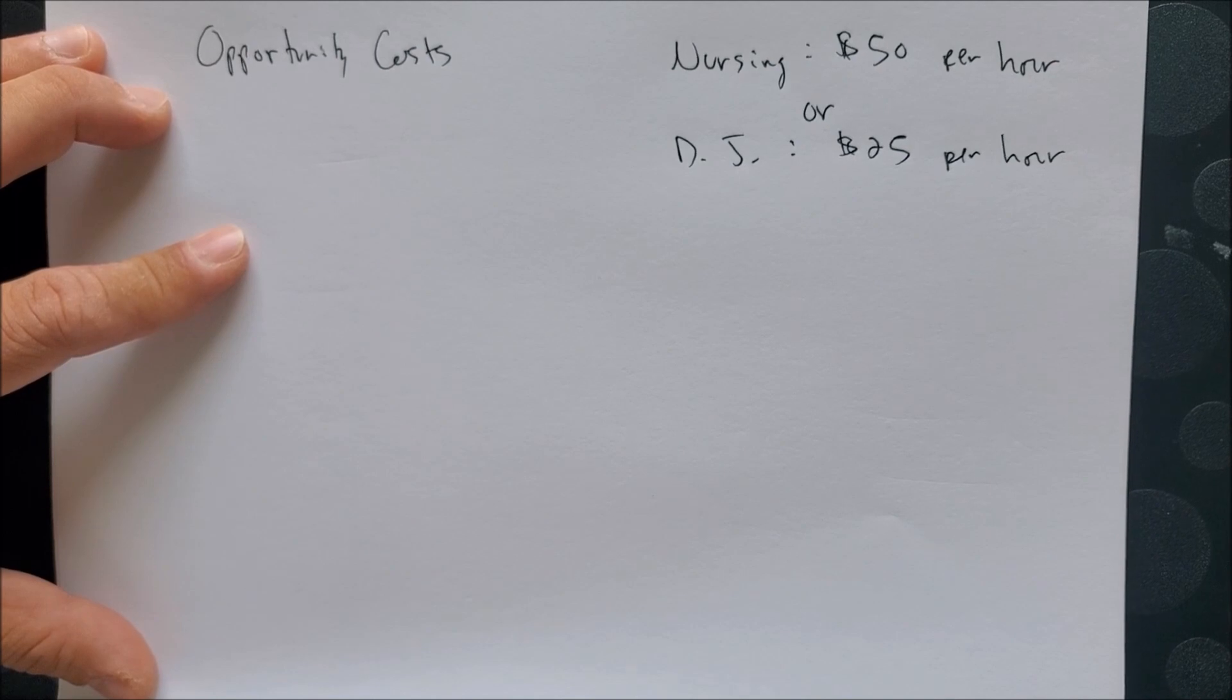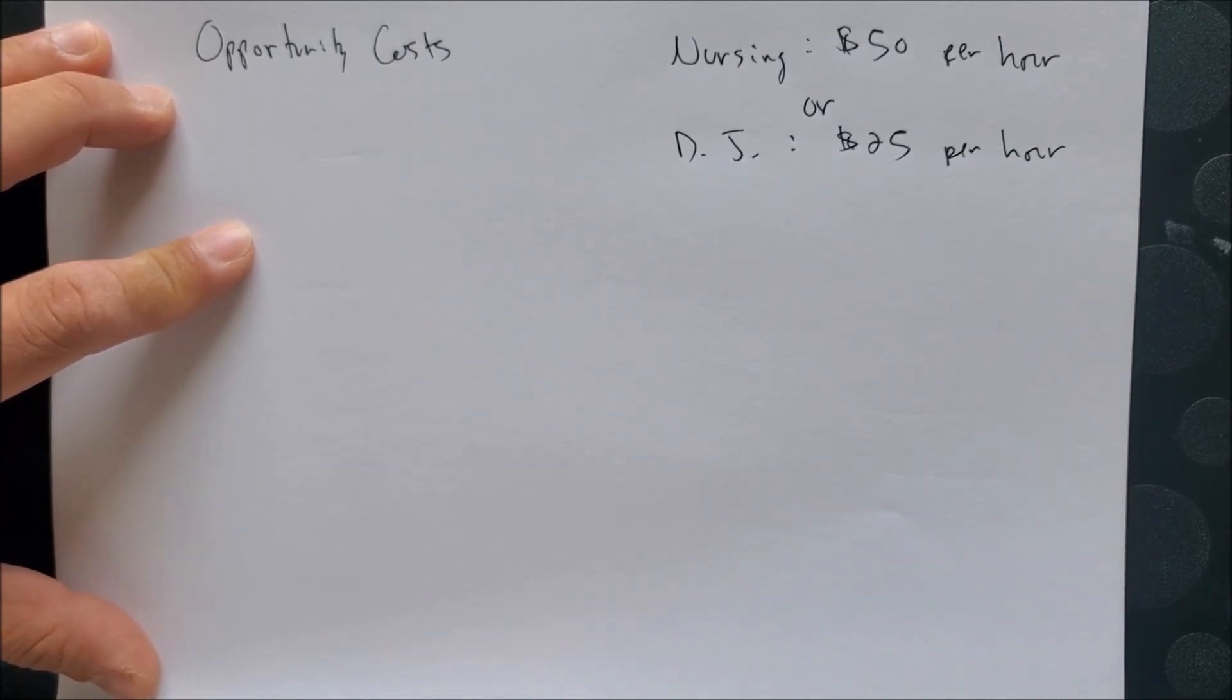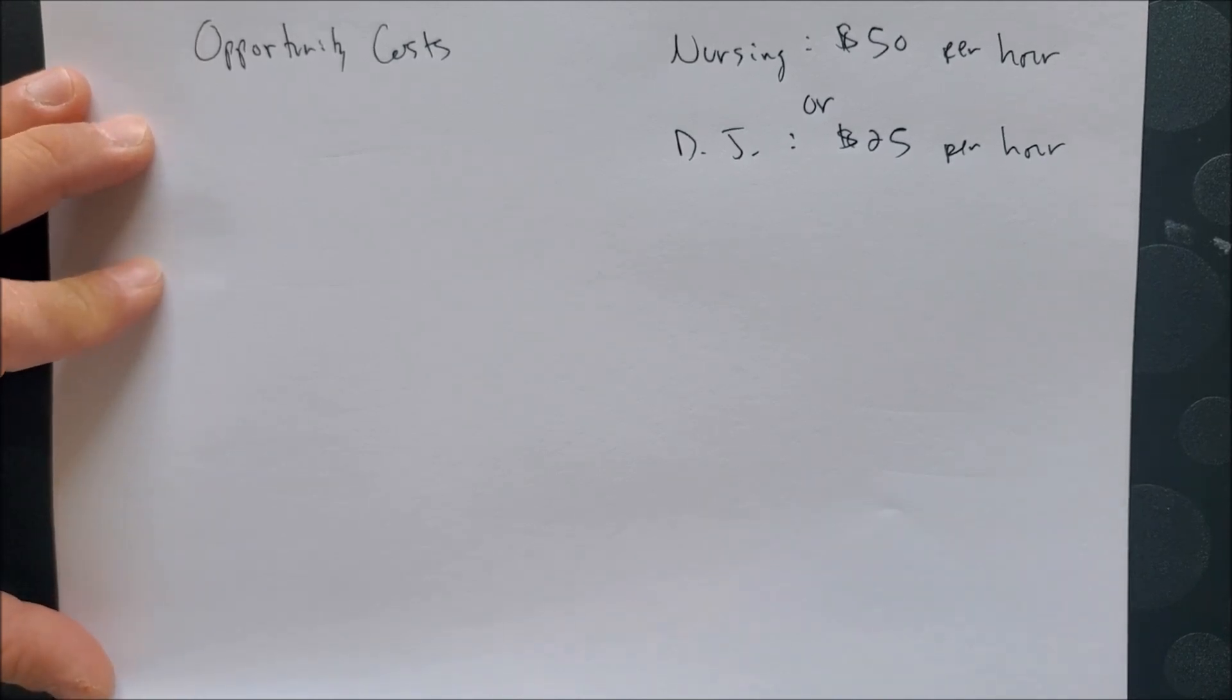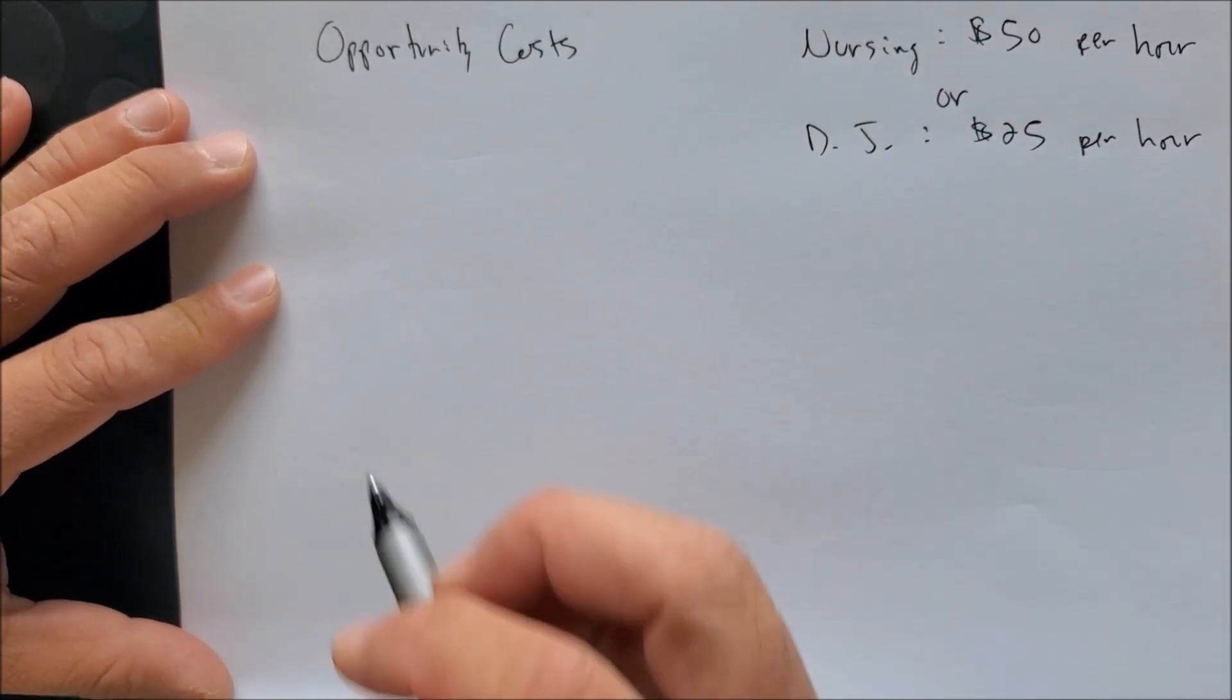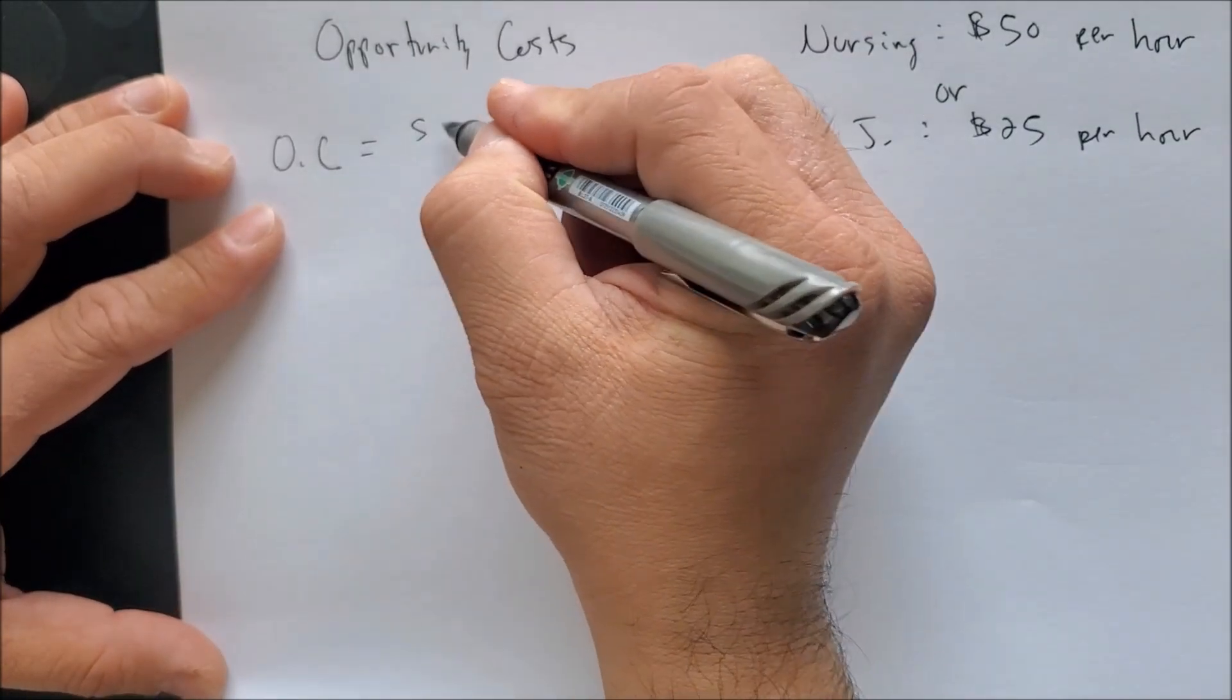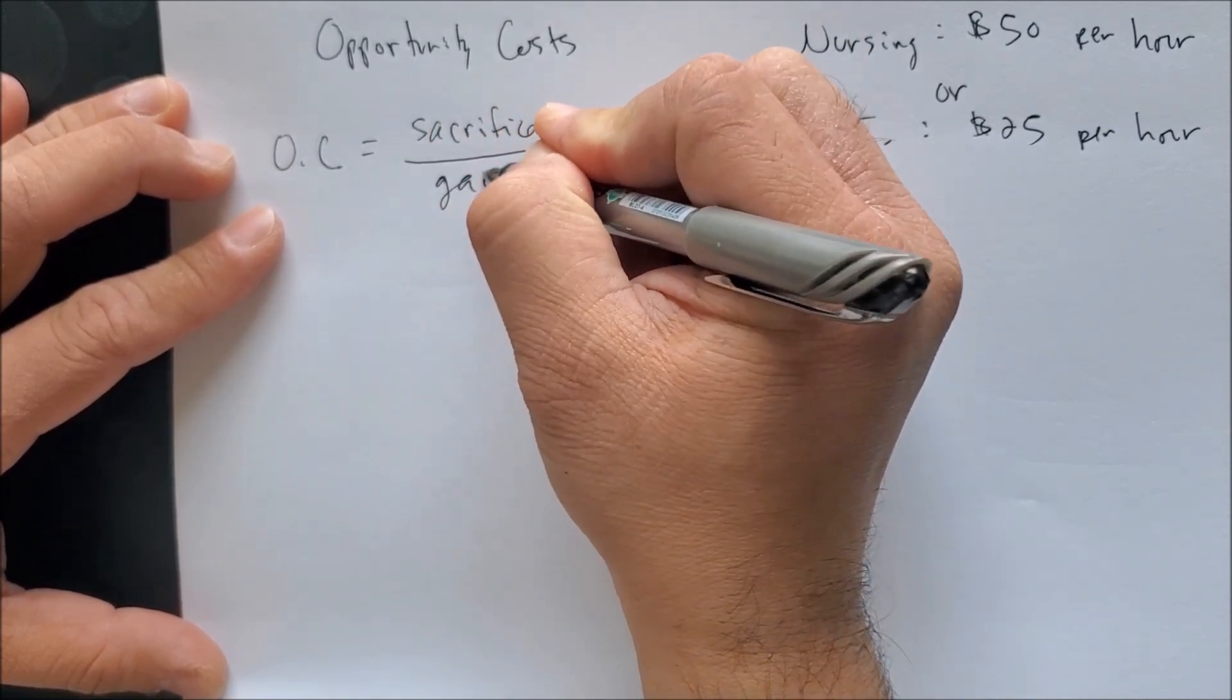Now we want to know what is your Opportunity Costs in choosing one or the other. To make things simple, we can use a formula called Opportunity Costs. It is simply OC, Opportunity Costs, as a function of what you will sacrifice over what you will gain.